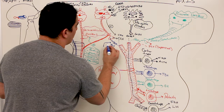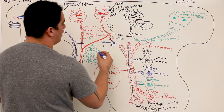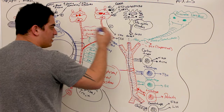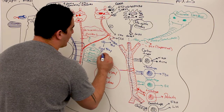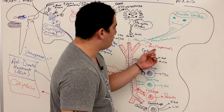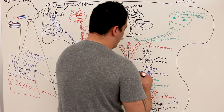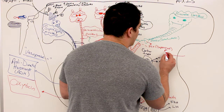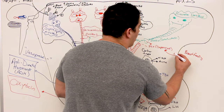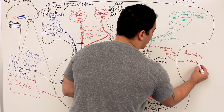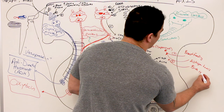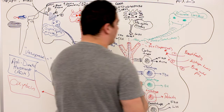For TRH release, secondary triggers include cold temperatures — when internal body temperature is lower than normal — and pregnancy. For PIH and prolactin regulation, secondary triggers include breastfeeding, estrogen levels, and birth control pills, all of which can stimulate prolactin release.